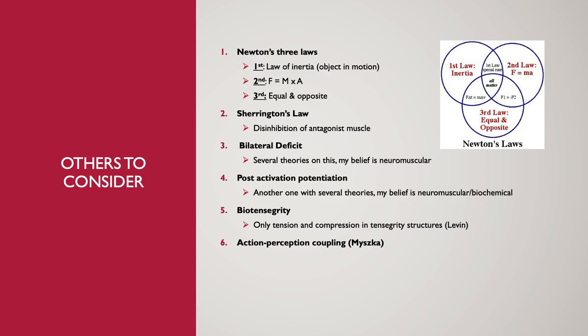My belief on the bilateral deficit is the neuromuscular theory — essentially a potentiation effect where when we train, say, a single arm dumbbell press with the right arm, there's actually a neurological stimulus that goes to the left arm as well. This isn't going to add mass or strength on its own, but there is an effect. For motor control and neuromuscular reasons, the bilateral deficit is an important one to know.